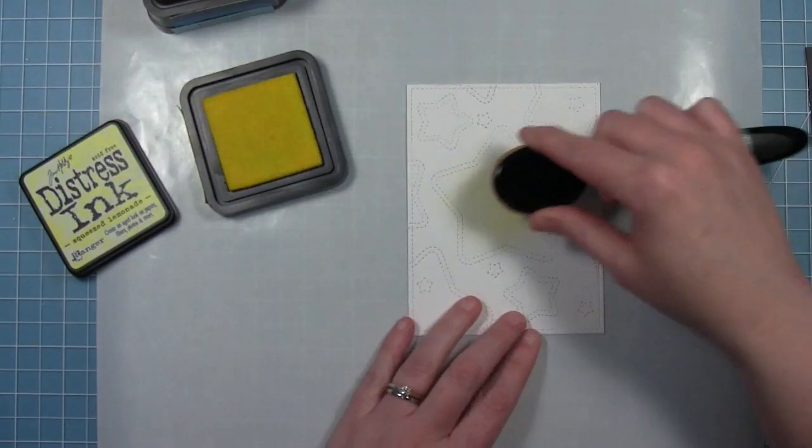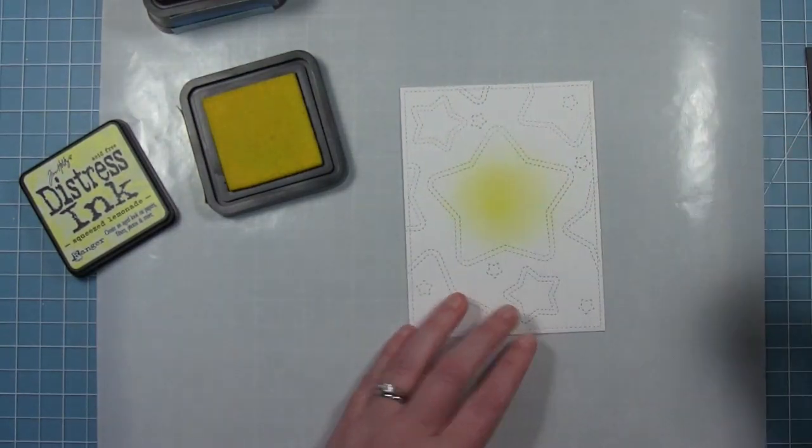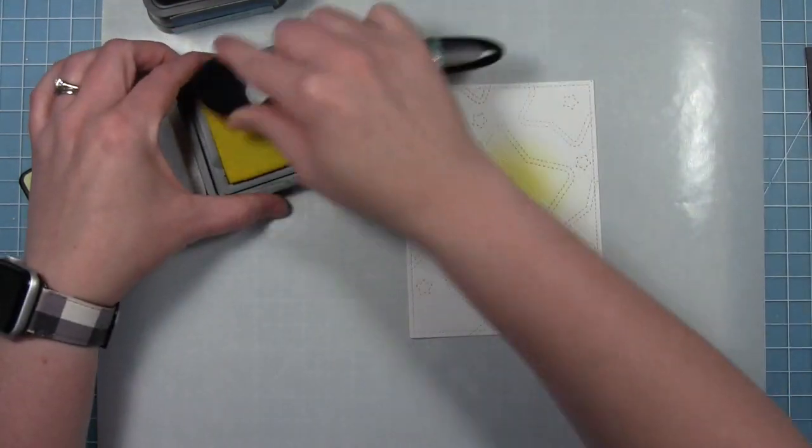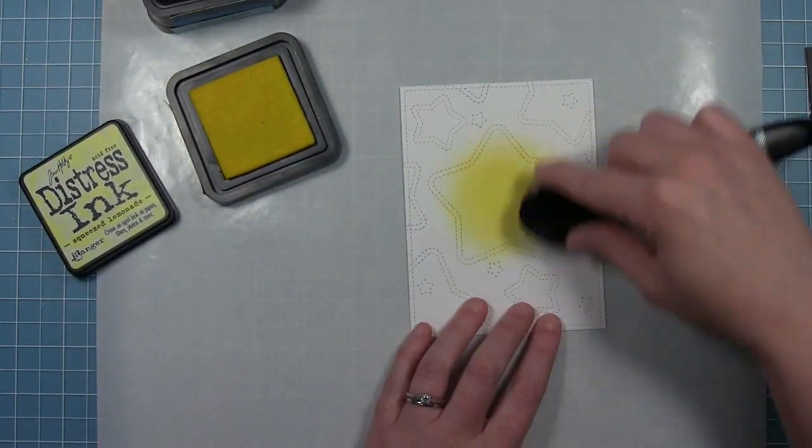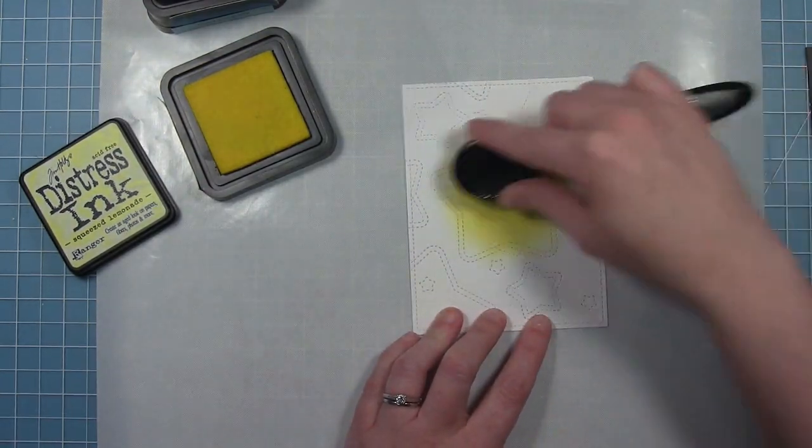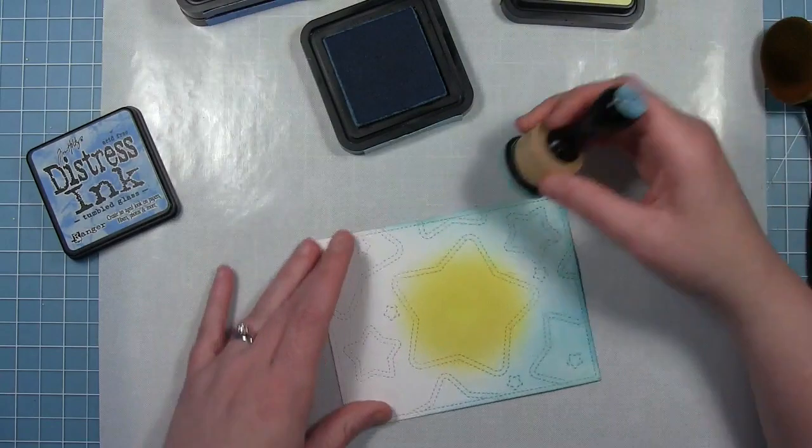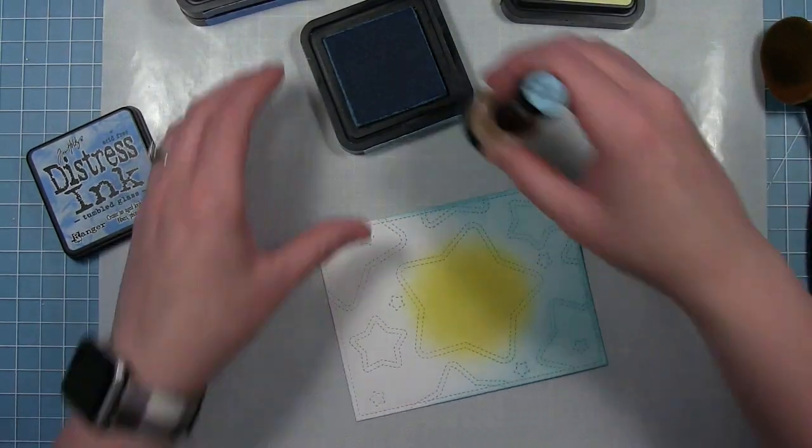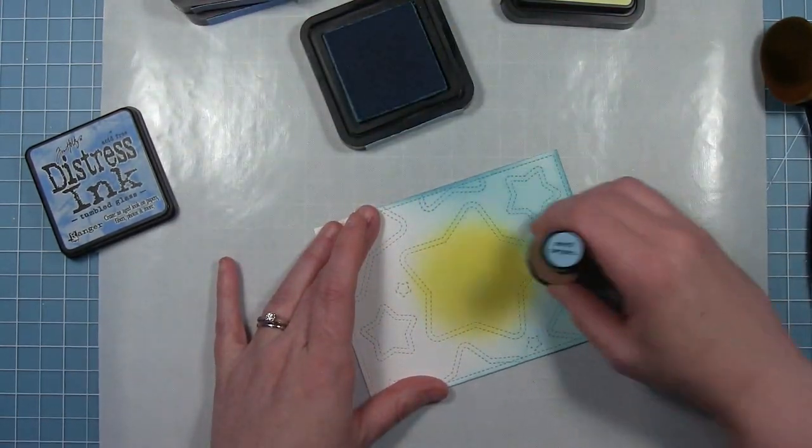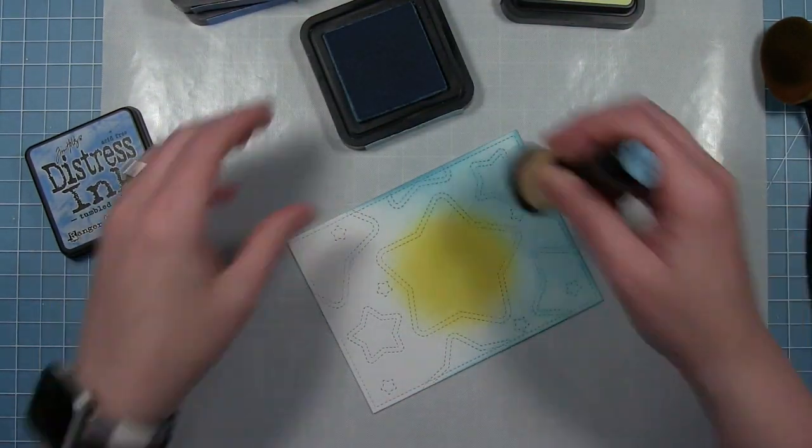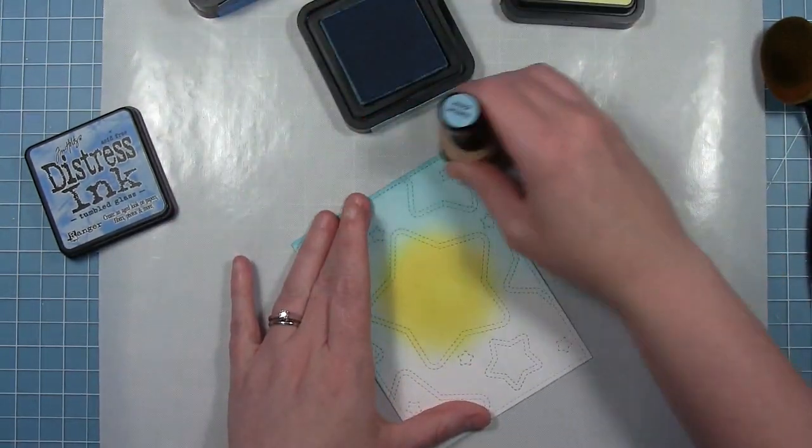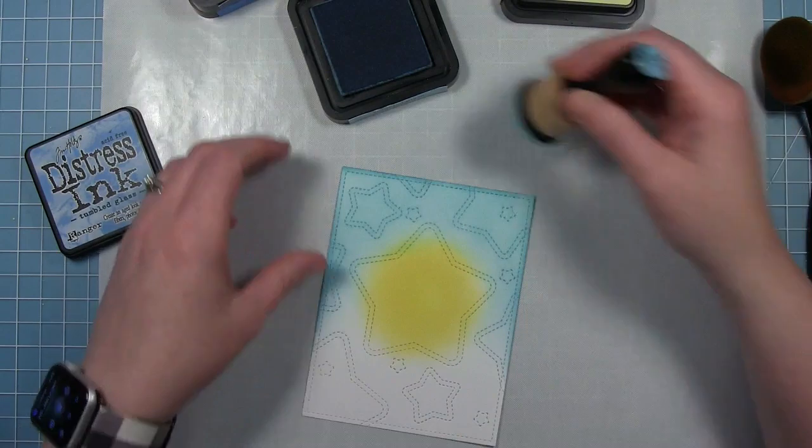Now I can start doing some ink blending on my background. So what I wanted to do is have a glowing star in the center where my sentiment is. So I'm starting with some squeezed lemonade ink and I'm just going around right in the middle of that star. Now I'm going to go in with tumbled glass ink which is a very light blue and I'm going to put a layer across the whole background pulling it from the outside towards the center where that glowing star is. So I'm just going to fill in all that white with that blue up to the edge of my yellow glow.